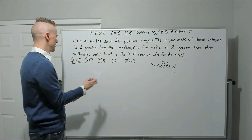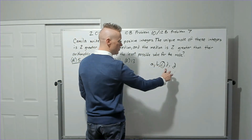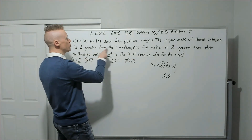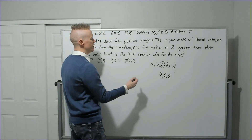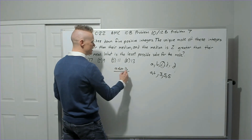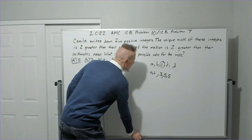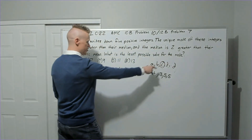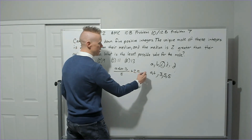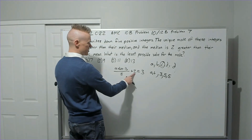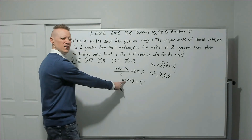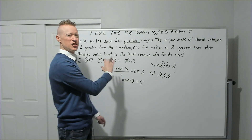Since we want the least possible value, let's test answers. If the mode is 5, then d = 5, and the mode must be two greater than the median, so the median c = 3. Then the average equals a + b + 13 all divided by 5, and since the median is two greater than the average, average = 1. So a + b + 13 = 5 — but those can't be positive integers. This fails.